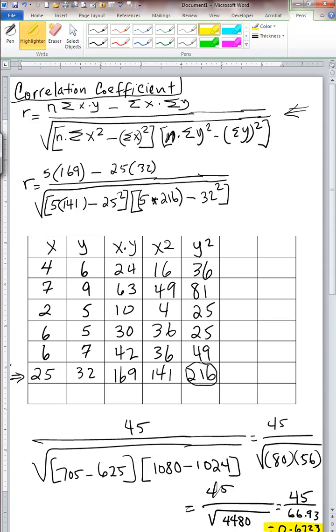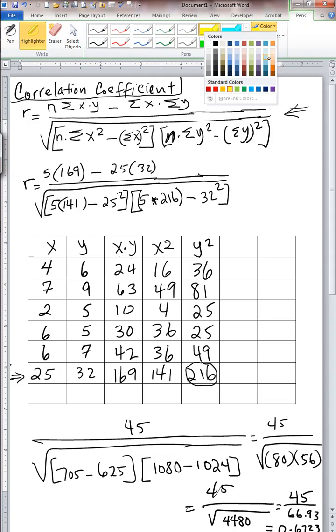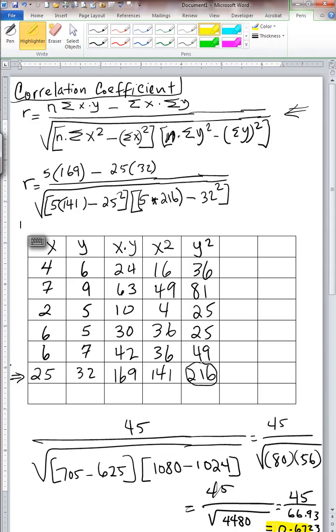Pearson's product moment correlation coefficient, 0.6723, which essentially means that there is a positive relationship between these two variables. I don't want anybody to confuse that with a negative sign. That's a positive. And our correlation coefficient is a positive 0.6723, which essentially means that these two variables are positively correlated, meaning that as one increases in value, the other one also increases.